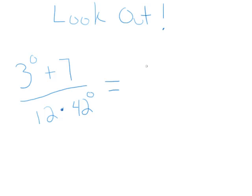You're going to want to look out for a couple of tricks for the zero power because just because you see a zero power doesn't mean it's automatically 1. Just the number that is being raised to the zero power becomes 1. So in this example here, 3 to the zero power will become 1, and 42 to the zero power will become 1.